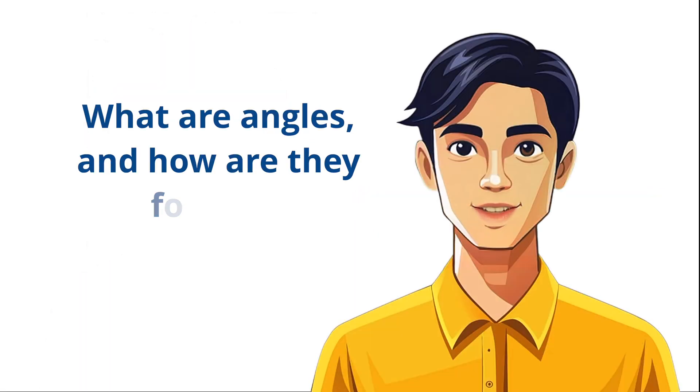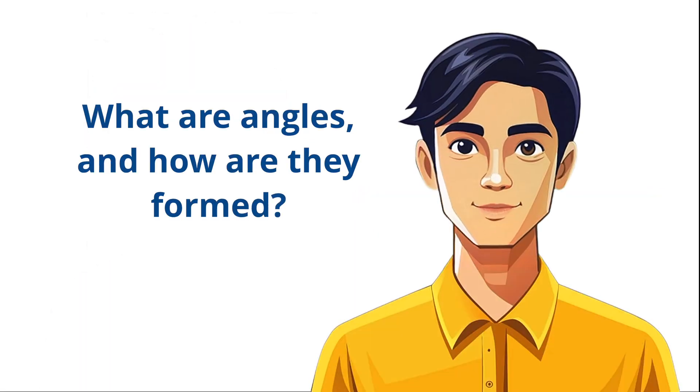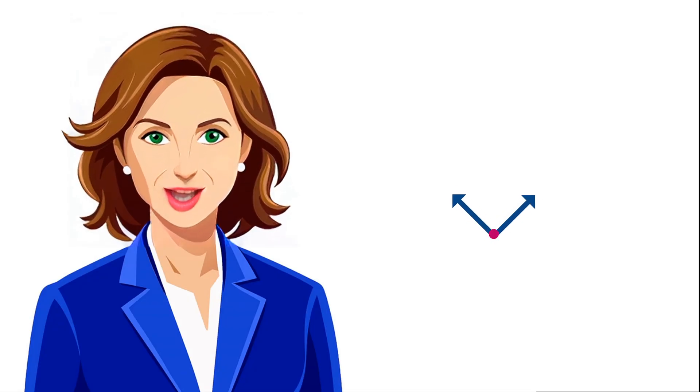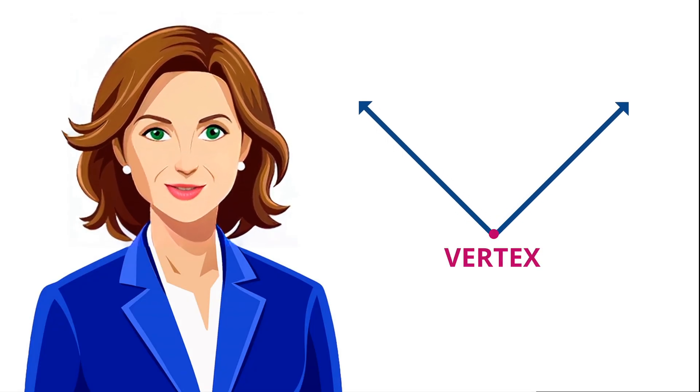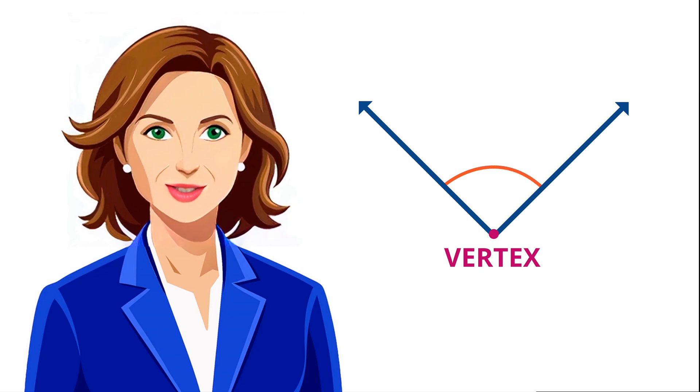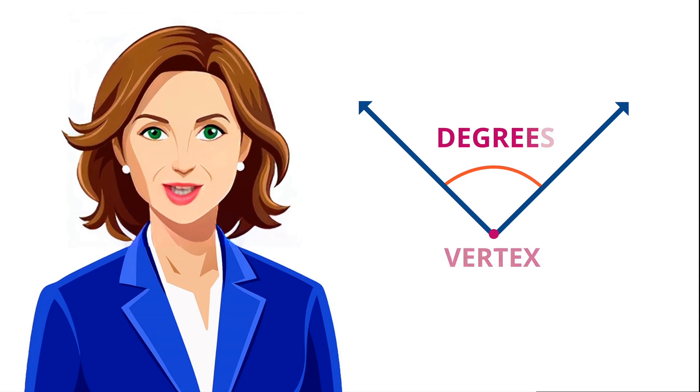What are angles, and how are they formed? An angle is formed when two rays meet at a common endpoint called the vertex. The space between these rays is measured in degrees.